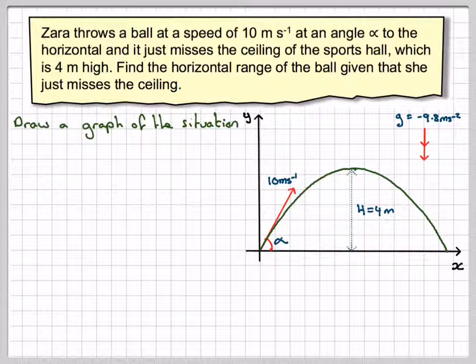The height here is 4 because that's the height of the ceiling. We're going to assume there's no air resistance and we're going to ignore the width of the ball as well.